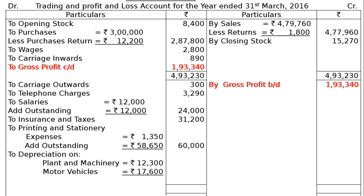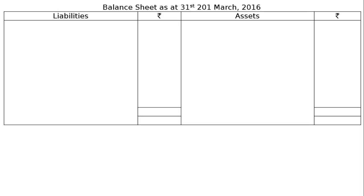Depreciation is charged on plant and machinery and motor vehicles — these are the depreciable assets. Building is also depreciable but the question states no depreciation will be charged on building, so we have not charged it. Total depreciation: rupees 29,900. Total the credit side: rupees 1,93,340. The net profit carried down is rupees 44,650.